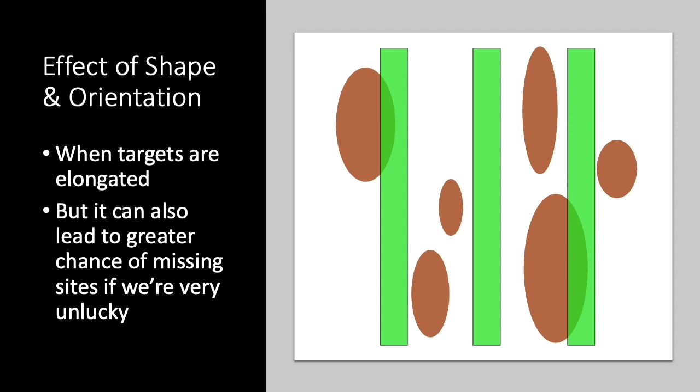By contrast, if our transects are parallel to the main axis of the sites, then the probability of intersection is dramatically lower. Consequently, whenever we have some grounds for predicting the orientation of sites, we should take advantage of it.